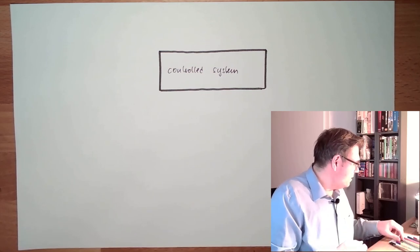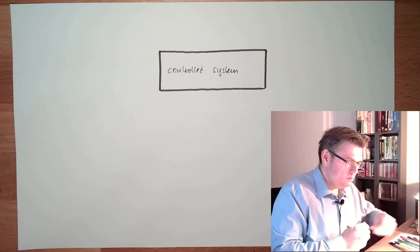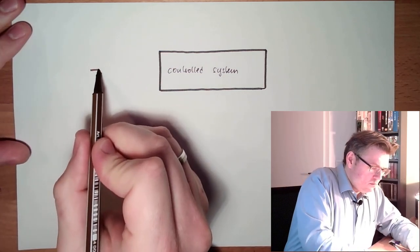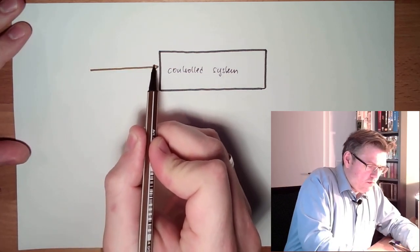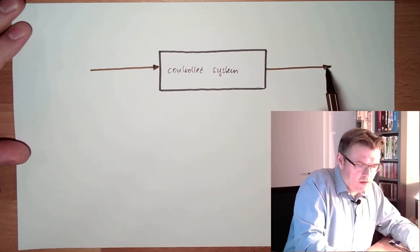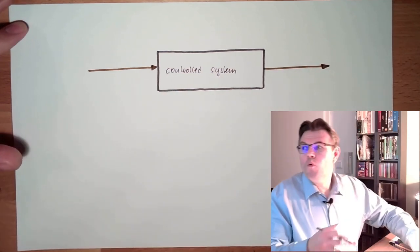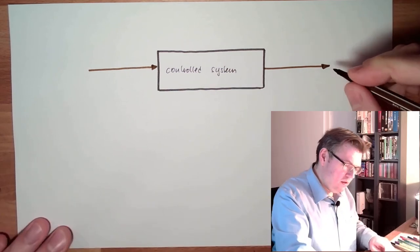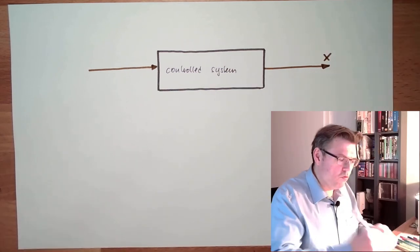Usually there are some things going in, energy, whatever, and some things coming out. And I want to influence what is the result. So, this here is the controlled variable x.